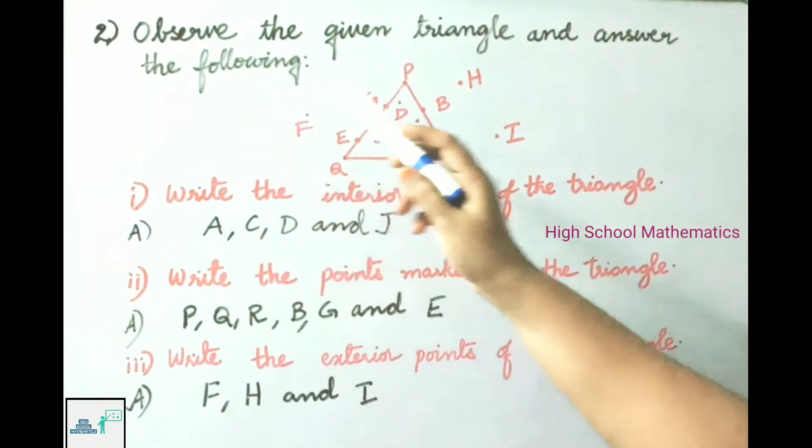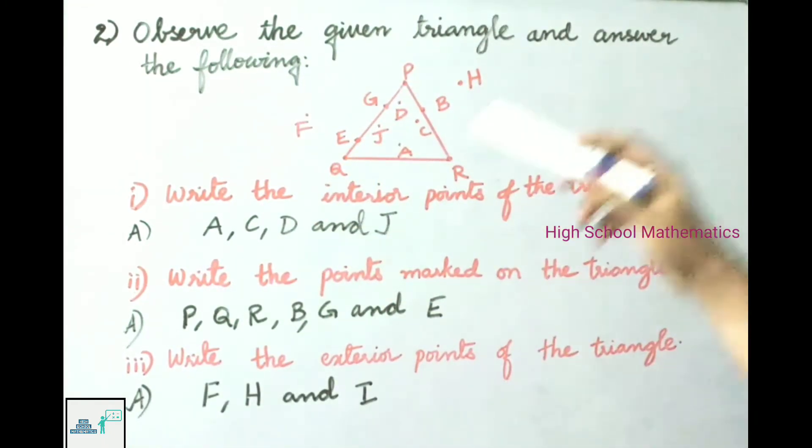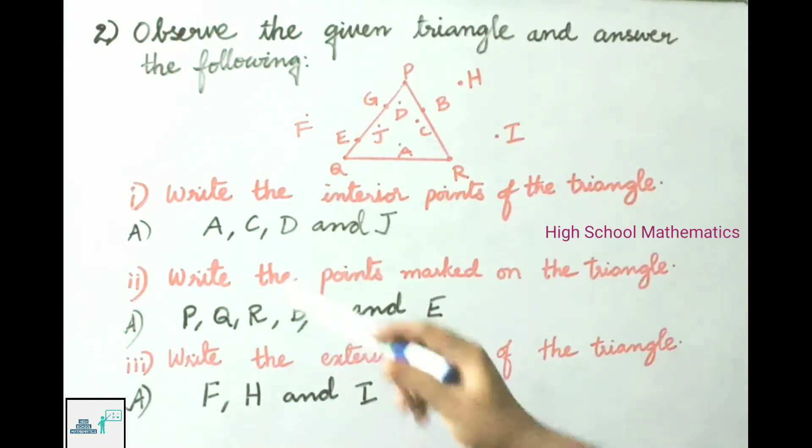See now question number 2. Observe the given triangle and answer the following. See now first one: Write the interior points of the triangle.